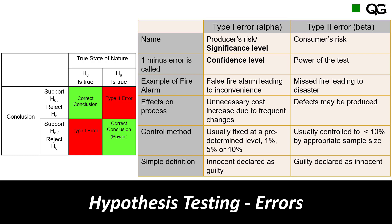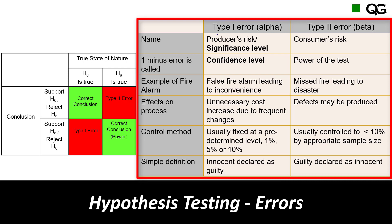As we said earlier, Type 1 error is a false alarm — things have not changed. The machine was still producing bottles with 150 cc and 2 cc as the standard deviation, but we raised a false alarm based on a small sample. We stopped the machine and readjusted it even though there was no need to do that. This was a Type 1 error.